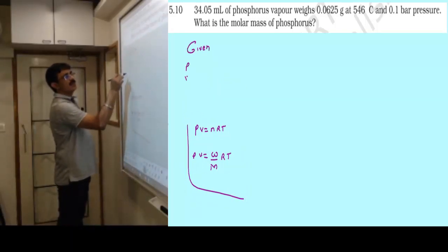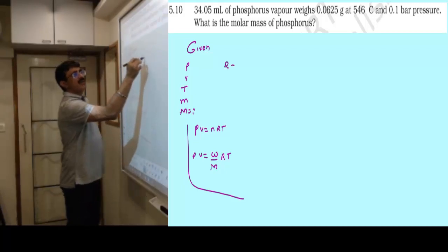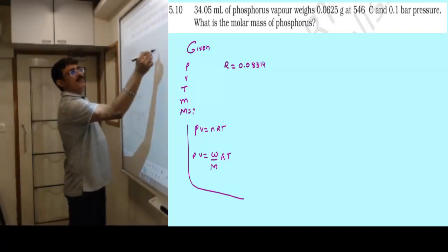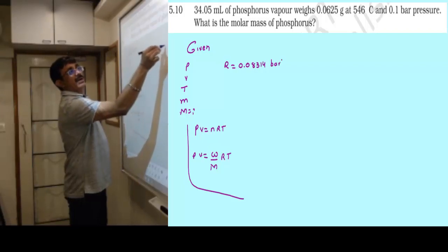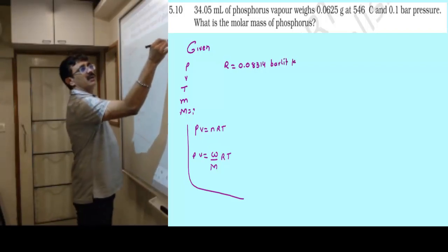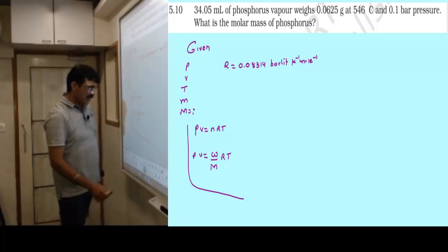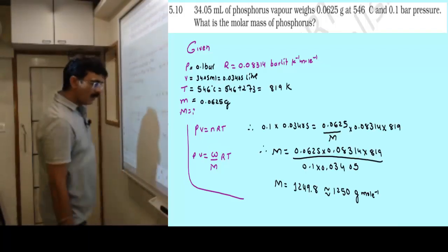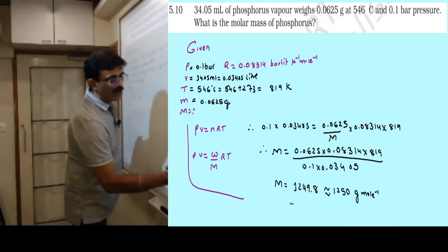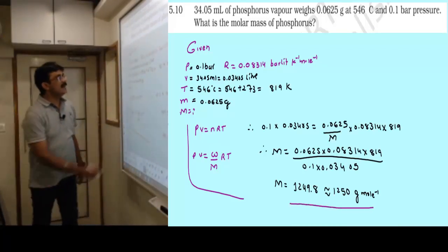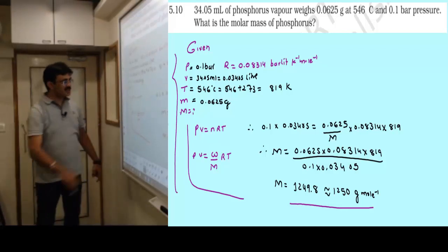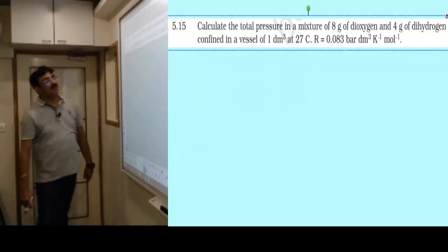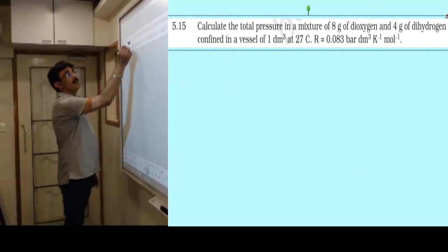Simply write given: pressure, volume, temperature, mass, and molecular mass to find. The R value is 0.08314 bar liter Kelvin inverse mole inverse. Remember, do not forget to write the unit. Please do that and get me the answer. If you solved it, the answer should be 125.0 gram per mole. If not, please stop here and check carefully.